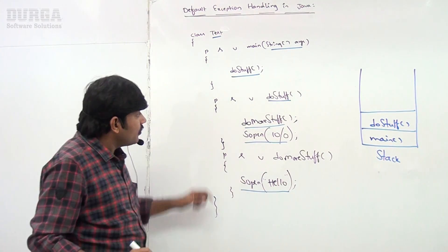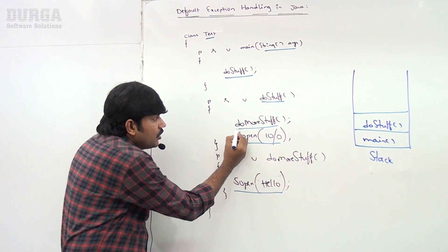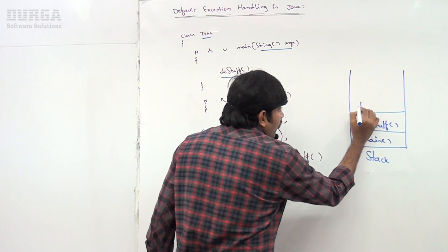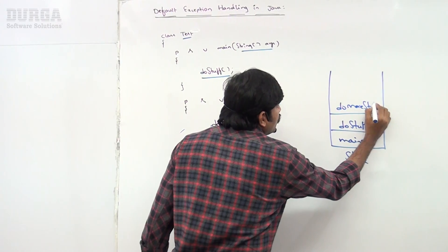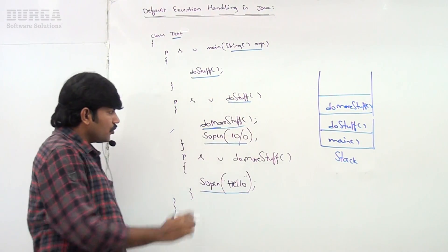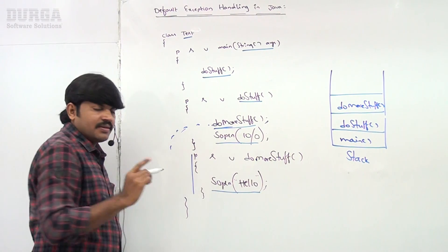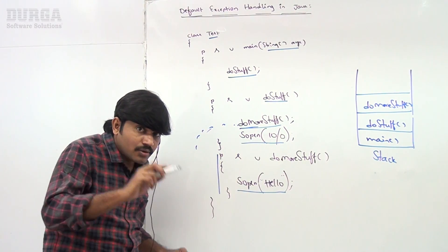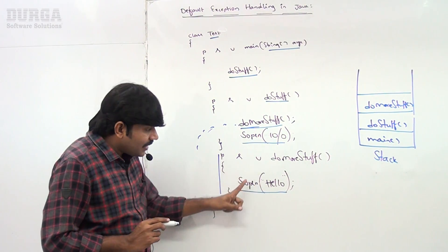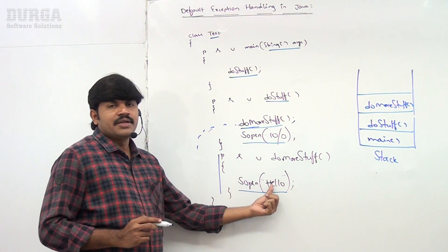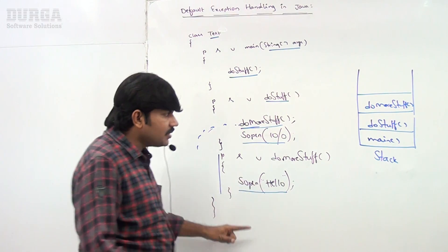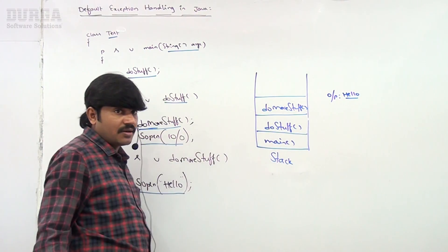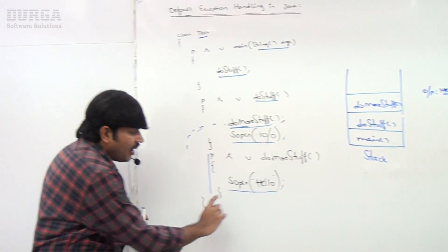doStuff is calling doMoreStuff. Now whenever control enters doMoreStuff, inside doMoreStuff we have System.out.println of 'hello'. That's why the output will become 'hello'. After executing that println, there are no other statements in doMoreStuff.